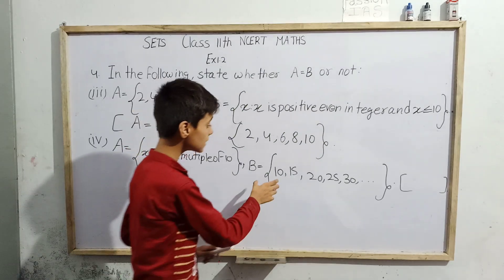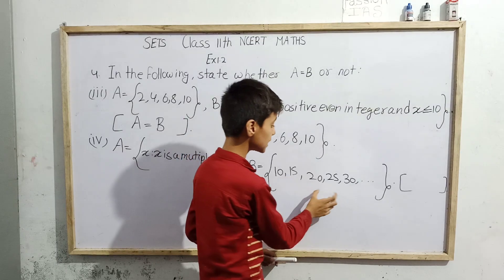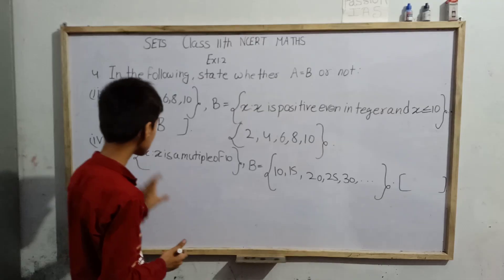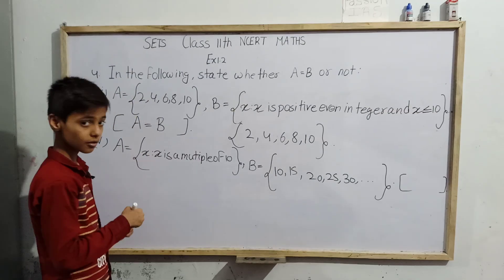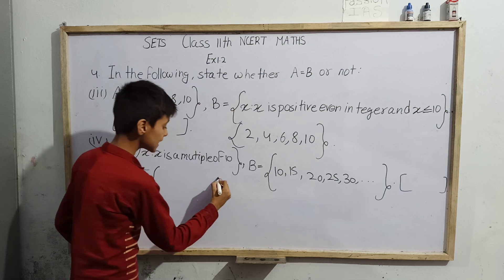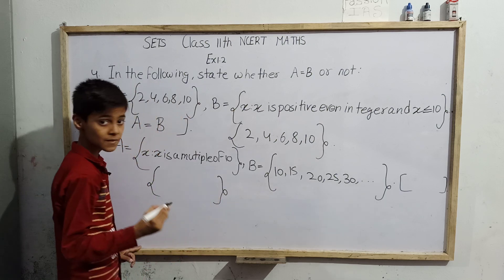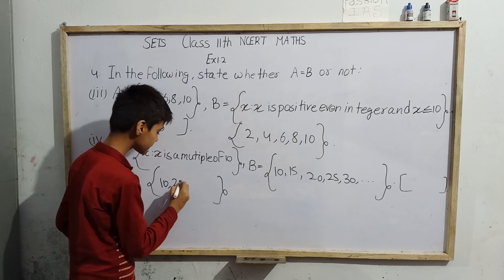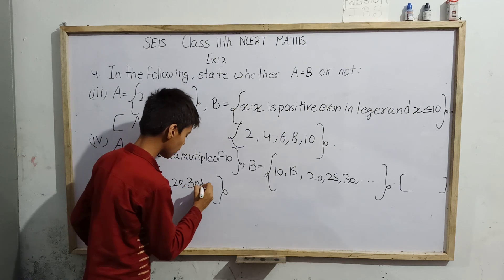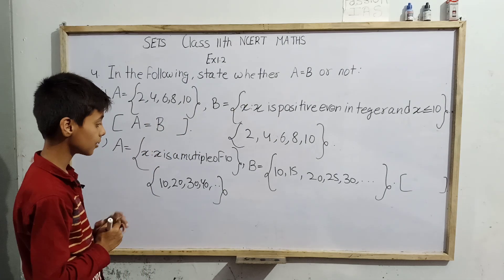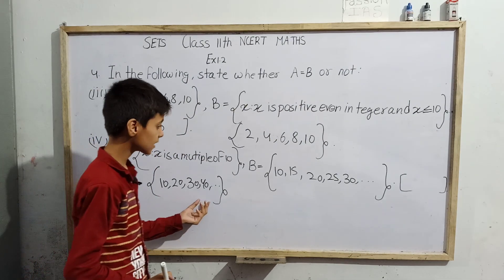Next we can see A={x: x is a multiple of 10} and B={10,15,20,25,30,...}. Here we can see multiples of 10. Let us write A in roster form. What are multiples of 10? 10 itself, 20, 30, 40, and we can write dot dot dot because they will go up to infinity.